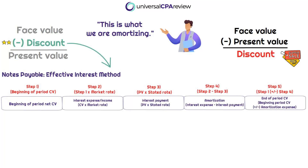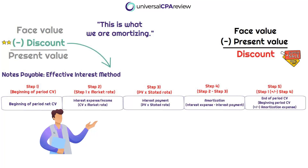We have five steps to the effective interest method. Step one is determining the present value of the notes payable — this applies when we are using the imputed rate. We can do this by applying the present value factors provided, or they may just tell you the present value. Either way, this is the beginning carrying value — the amount presented on the balance sheet as the note payable on day one. Step two is determining the interest expense — which could also be interest income depending on which side of the lending agreement we're discussing.